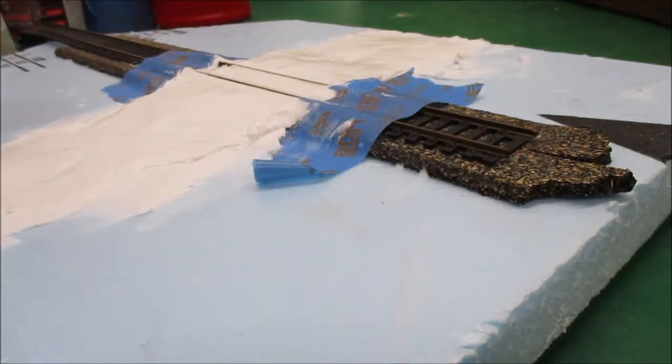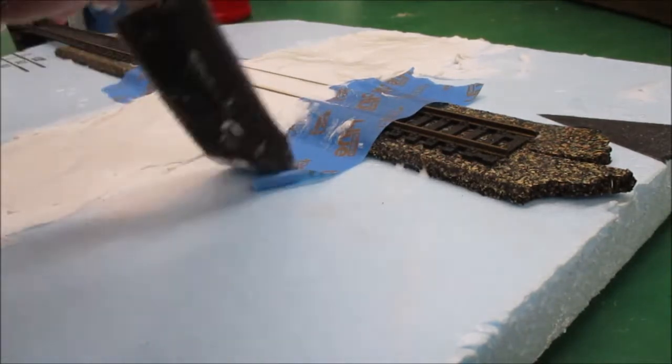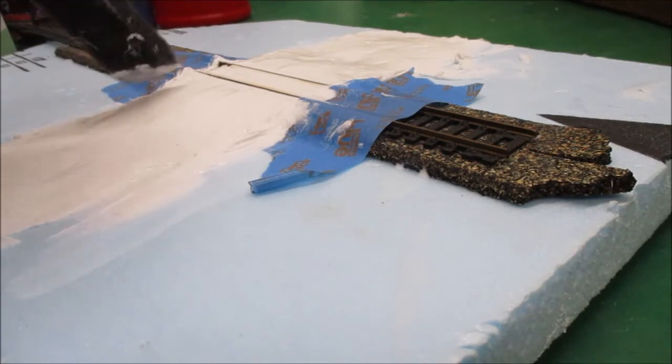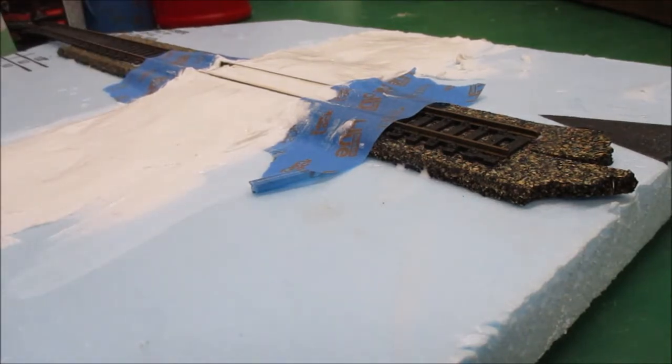I noticed I put cork roadbed underneath and I wanted to see what happens trying to make an approach that's not too steep. That's pretty steep. I'm just trying to save, not use too much of this stuff.